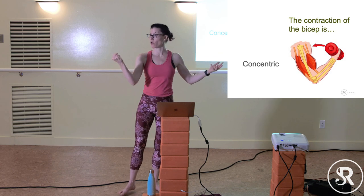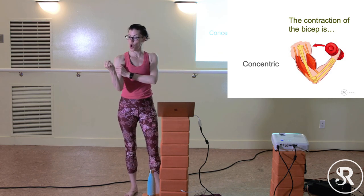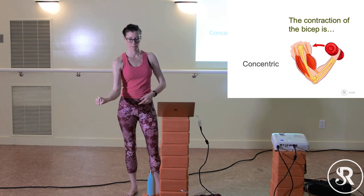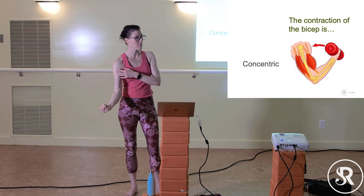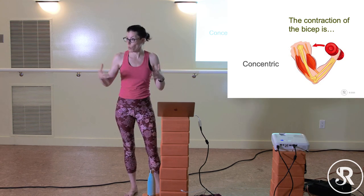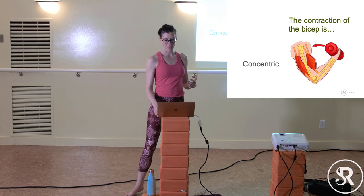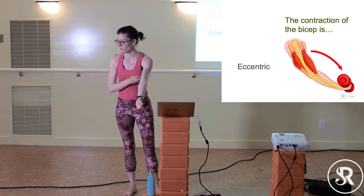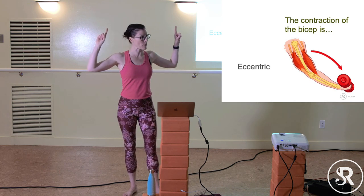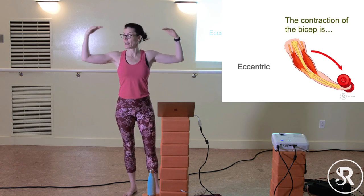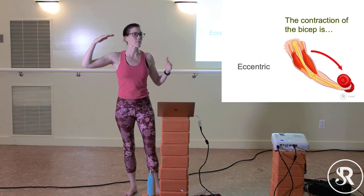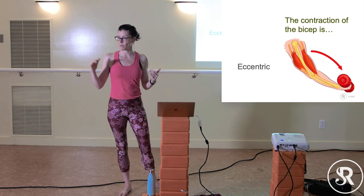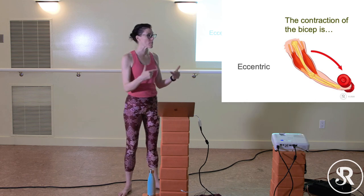Now imagine still holding that heavy weight but slowly lowering it. The length of the bicep is actually getting longer, but is it working? Yes — it can be working and lengthening at the same time. That is called eccentric contraction. This is important because gravity is always trying to push us in one direction and we're always resisting it.